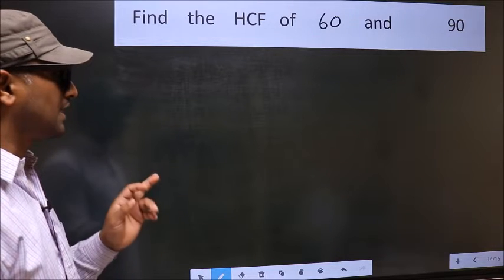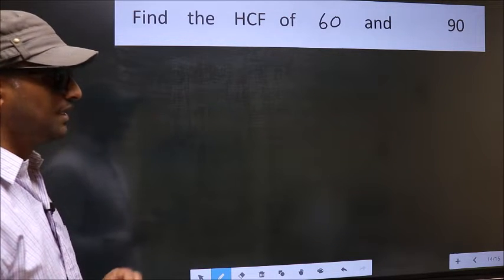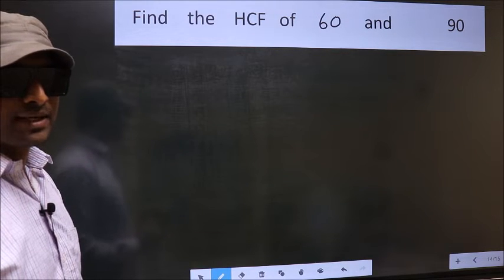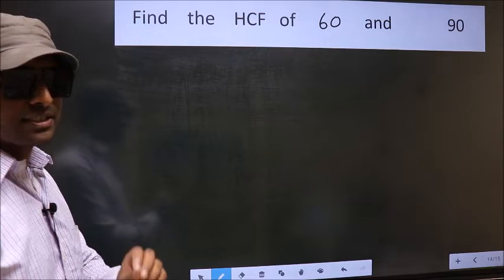Find the HCF of 60 and 90. To find the HCF, we should do the prime factorization of each number separately.